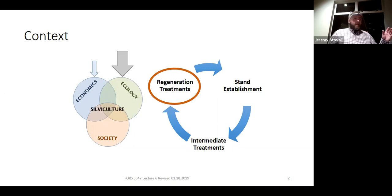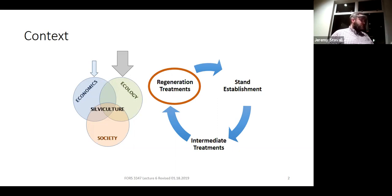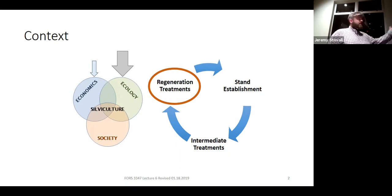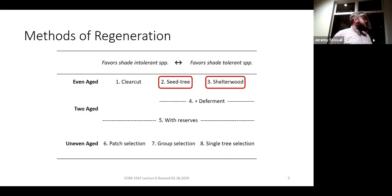We talked a lot about societal factors with clear cutting, but as you move into seed tree cuts, shelter woods, and then two-aged and uneven-aged systems, a lot of those societal factors become mitigated because you're not harvesting all the trees. A lot of the issues with clear cutting arise because you're harvesting almost all the trees, so any of these other systems are going to help mitigate some of those issues.